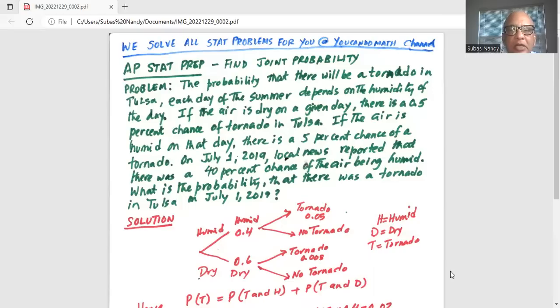The probability that there will be a tornado in Tulsa each day of the summer depends on the humidity of the day. If the air is dry on a given day, there is a 0.5% chance of tornado in Tulsa. If the air is humid on that day, there is a 5% chance of tornado.